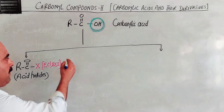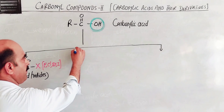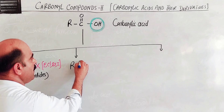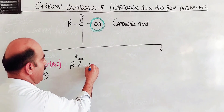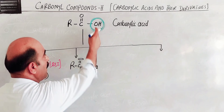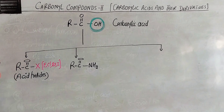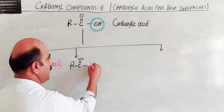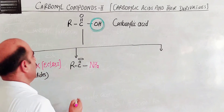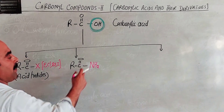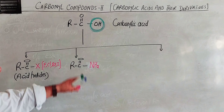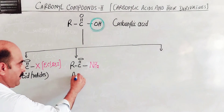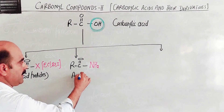Another example: the derivative R-CO-NH2, where the O-H group is replaced by an amino group NH2. In this case the color changes — the NH2 amine group replaces the O-H group — and the resulting compound is called acid amide.